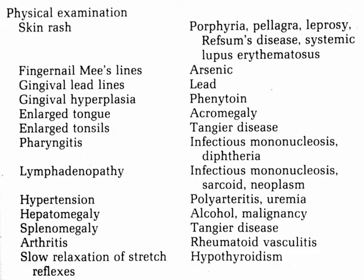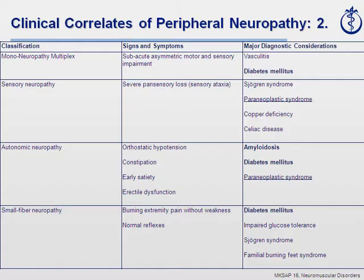Do not forget your physical exam findings. On the skin, in porphyria, leprosy, and Refsum's disease, you may see skin problems, similarly in lupus. In neurology, we look at the nails — you see Mees' lines with arsenic poisoning, and lead lines in the gums with lead. Look for those when checking patients with neuropathy.